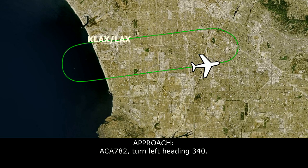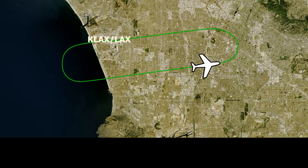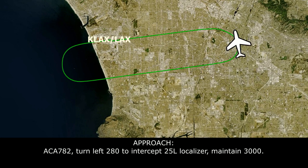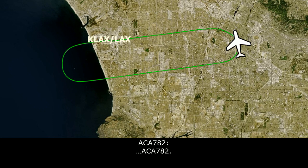Air Canada 782, turn left heading 340. Air Canada 782, turn left heading 280 and intercept the 25L localizer, maintain 3,000 to the marker.